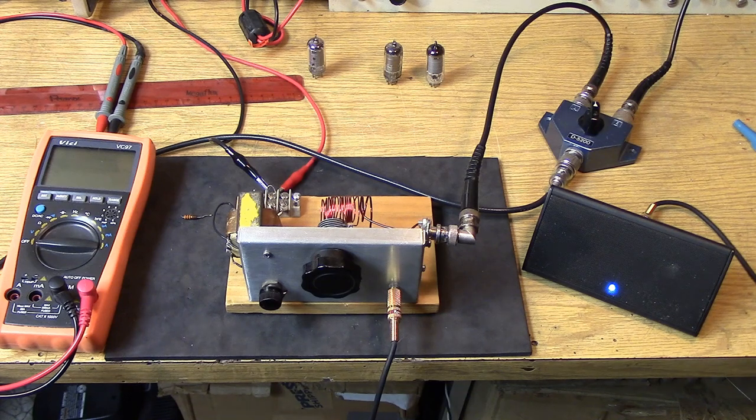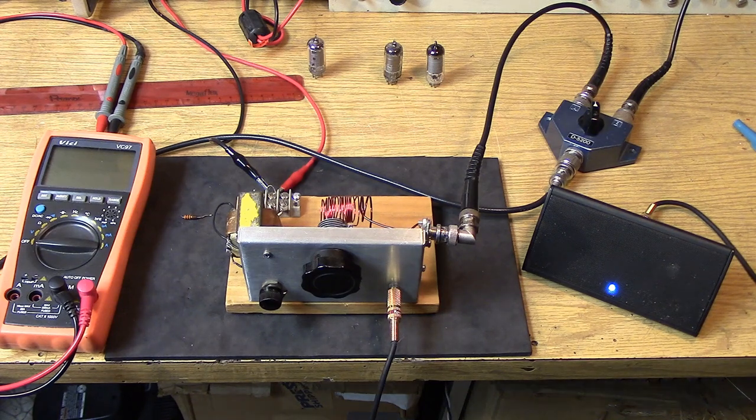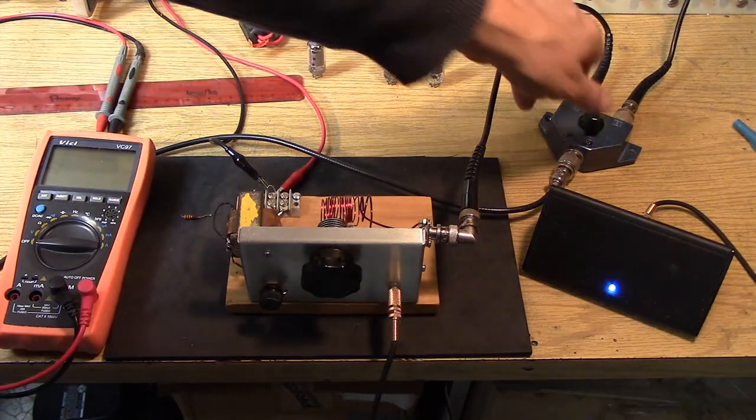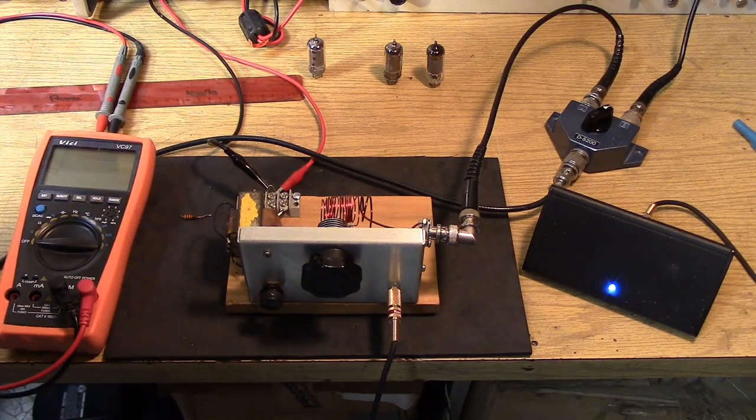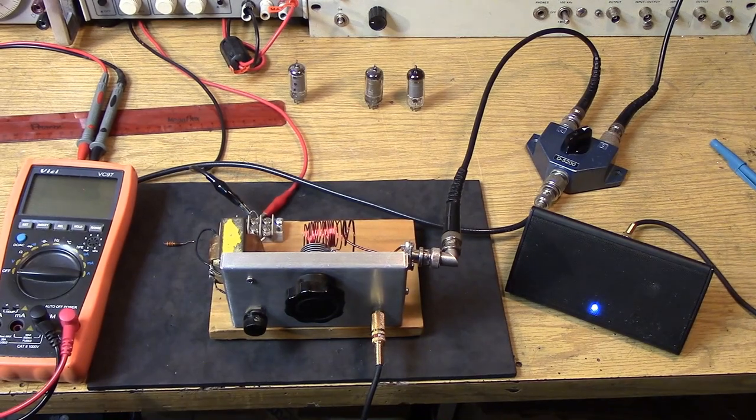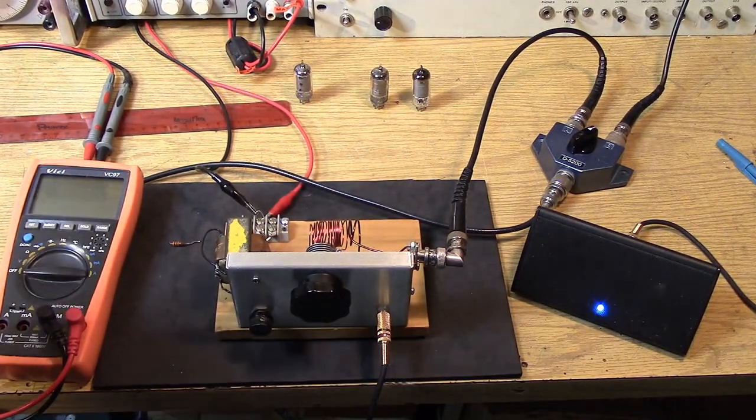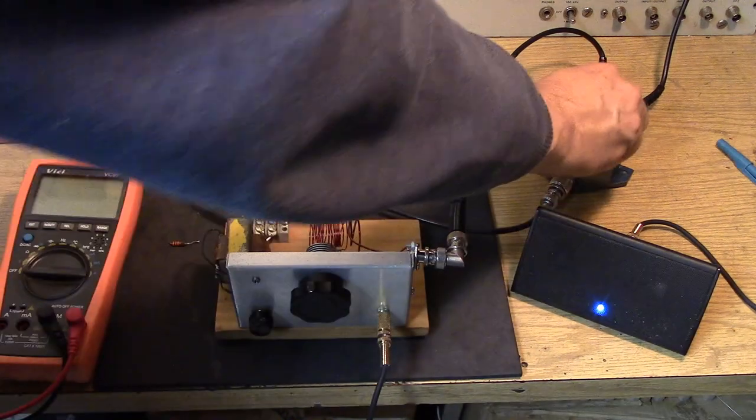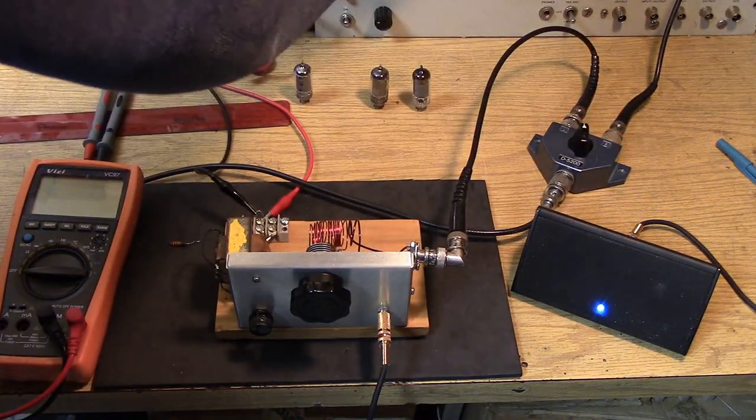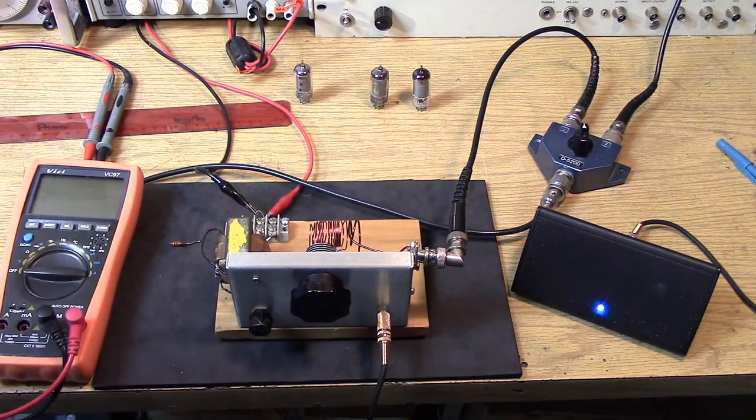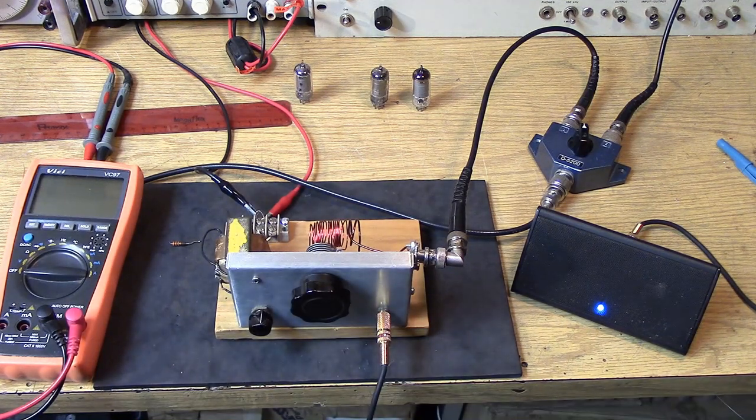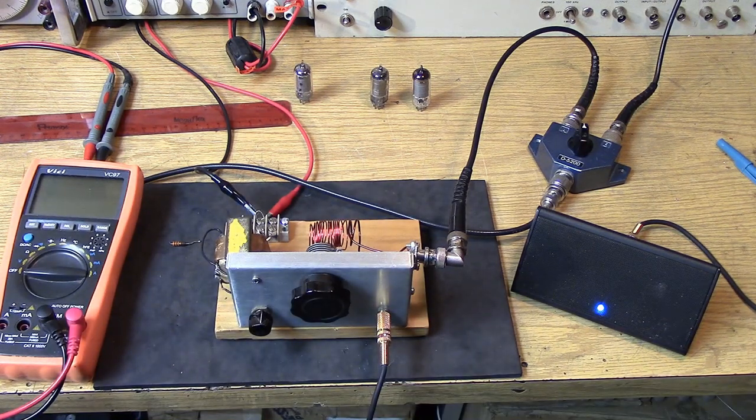I don't know if you can hear that, but that's the super regen picking up some PSK31 on 10 meters. How do I know? Well, I can go over to the big receiver. I know it's there. It's not real strong, but the super regen is able to pick it up. Okay, back to the super regen. And there it is. It's hard to believe, isn't it?